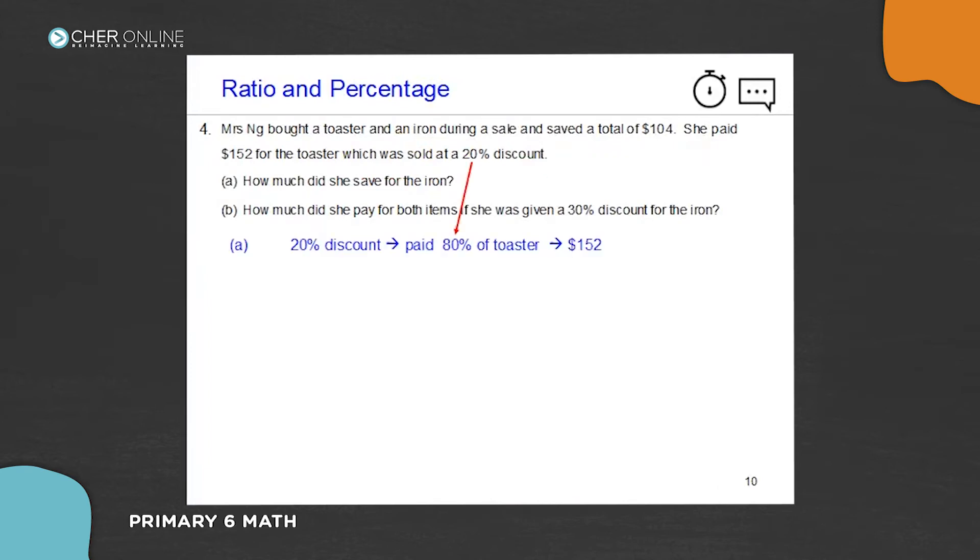First step, like what Ben said, 20% is discount. That means she paid 80% for the toaster. So $152 is for the toaster.